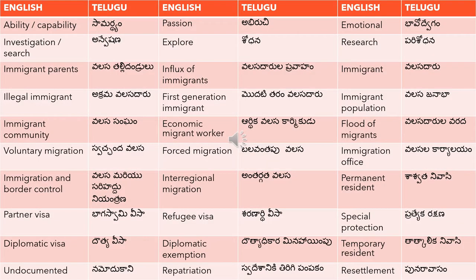The first word is ability or capability — you will translate this into Telugu as 'samarthyam'. Ability and capability both translate as 'samarthyam'. The next word is passion — 'abhiruchi'. Passion means 'abhiruchi'. Emotional means 'bhavodvegam'.